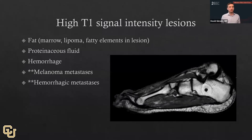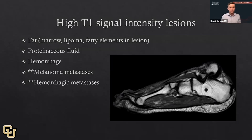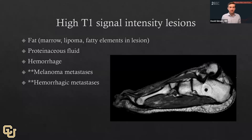This leads us to our final algorithm: high T1 signal intensity lesions. I put this last because it's one of the easier ones to understand. The differential diagnosis for high T1 lesions: fat is the easy one — normal marrow fat, geographic lesional fat like a lipoma, or other heterogeneous fatty elements. Proteinaceous fluid can be high T1 as well, and hemorrhage at certain maturation stages. Two important ones to keep in mind: melanoma — related to hemorrhage or melanin content — can be high T1, and hemorrhagic mets can also have that signal. Most of what we see here is relatively benign, but keep those two in mind.